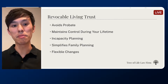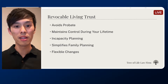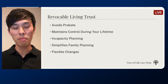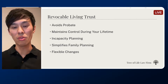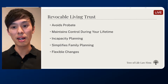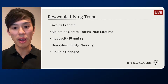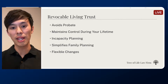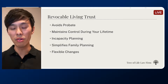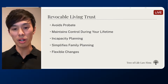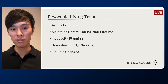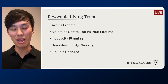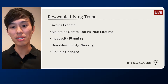Another benefit is incapacity planning. If you become incapacitated — let's say you have dementia, you're in a coma, or you have some sort of brain injury — a living trust ensures a smooth transition by empowering your successor trustee to manage your assets for you, avoiding the need for a court-appointed guardian or conservator. A lot of parents who have no trust, own a house, have money, no power of attorney, and then develop dementia — their kids can't automatically step in. They have to go to probate court and get a conservatorship, which takes a lot of time and money. With a trust, your kids or spouse can step in to manage that house for you.